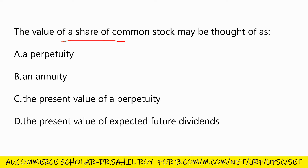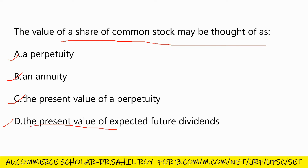Our next question: the value of a share of common stock may be thought of as — a perpetuity, an annuity, the present value of a perpetuity, or the present value of expected future dividends. The correct answer is Option D: the present value of expected future dividends.